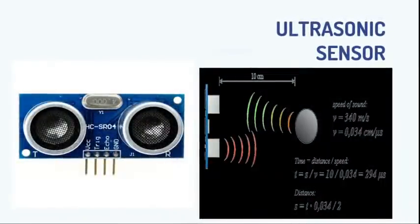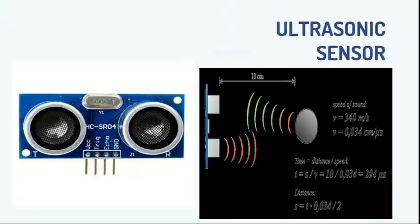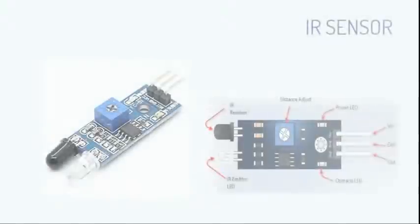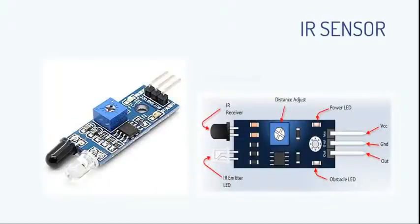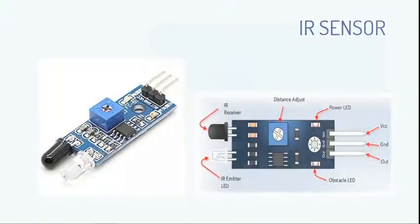The ultrasonic sensor has one transmitter and receiver. The transmitter sends an echo signal to the environment. If any obstacle is there, it reflects back to the receiver. Based on transmitter and receiver timing, we calculate the distance. It is mostly used in cars for reverse parking. We also have IR sensors — with transmitter and receiver — used in devices like Redmi phones with IR blaster to control remotes.